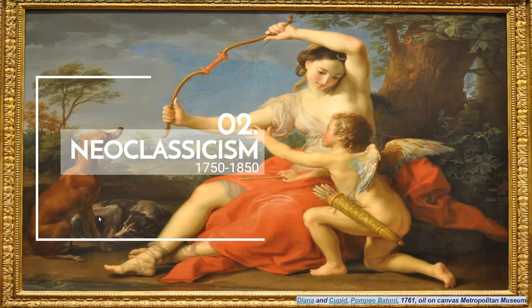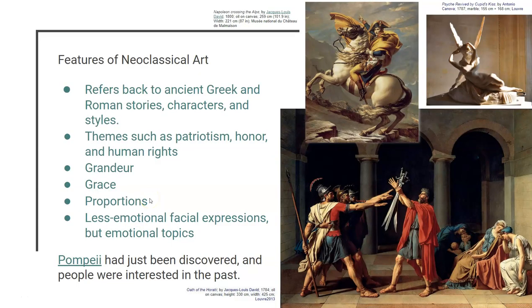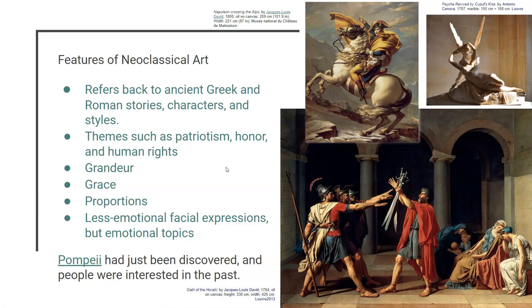Next up is neoclassicism, which took place from 1750 to 1850. The big shift from Baroque to neoclassical art happened partly because Pompeii had just been discovered. People were really interested in the past, and we see them looking back to ancient Greek and Roman stories, characters, and styles. So instead of depicting Christ and nuns and prophets, we see them suddenly sculpting Cupid and Psyche — ancient Greek or Roman gods.